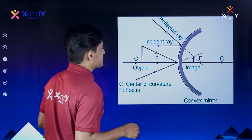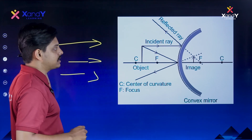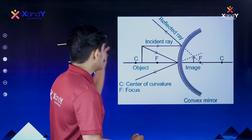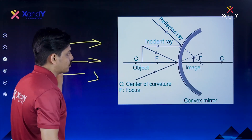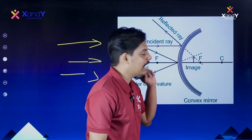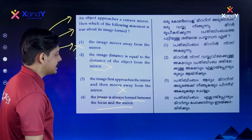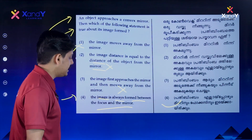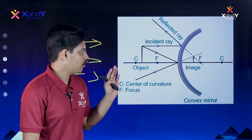Option 4: Image is always formed between the focus and the mirror. In a convex mirror, whether the object is at a finite distance or at infinity, the image is always formed between the focus and the mirror. So the answer is option 4: image is always formed between the focus and the mirror.